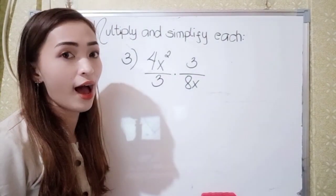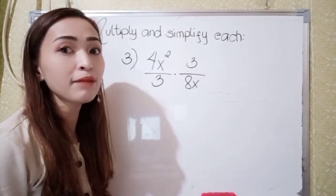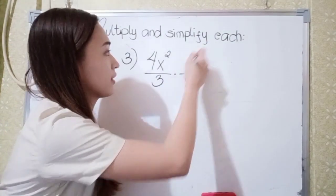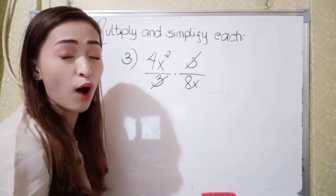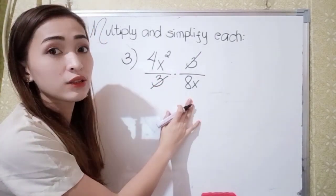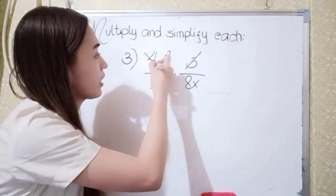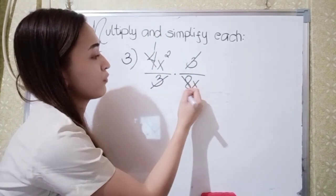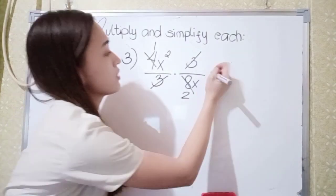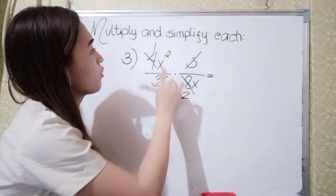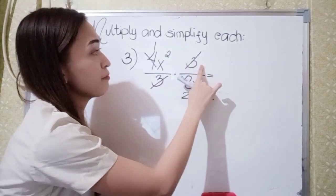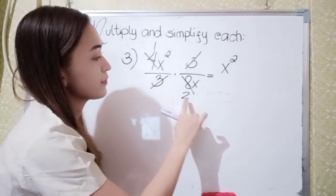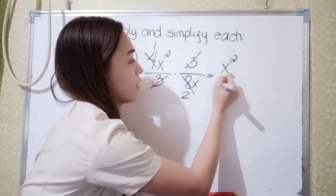For number 3, we have 4x squared over 3 times 3 over 8x. Here, we can simplify already: 3 divided by 3 is 1, so that cancels. Also, we can simplify 4 and 8 because 4 divided by 4 is 1, and 8 divided by 4 is 2. So let's multiply: x squared times 1 is x squared.